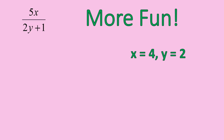So let's go ahead and substitute x equals 4 and y equals 2. Your expression should look like this, 5 times 4, and then in the denominator, 2 times 2, which was our y value, plus 1.